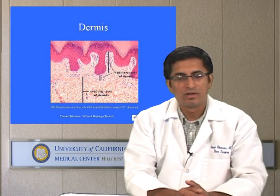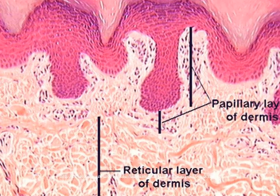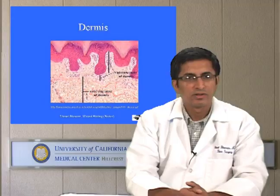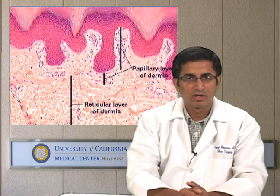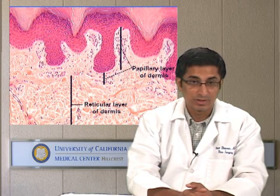The deeper layer is called dermis, which is made up of two layers. The one superficial or near to the epidermis is called papillary dermis, and the deeper part is called reticular dermis. These are two different types of dermal components, as the collagen within these two layers is structured differently. There are dermal papilla or epidermal projections into the papillary dermis, which is why it's called papillary dermis.